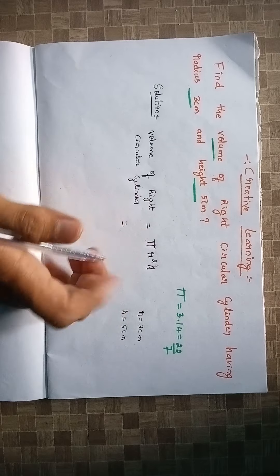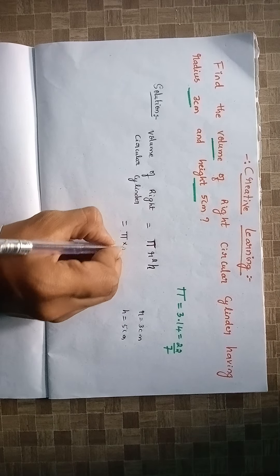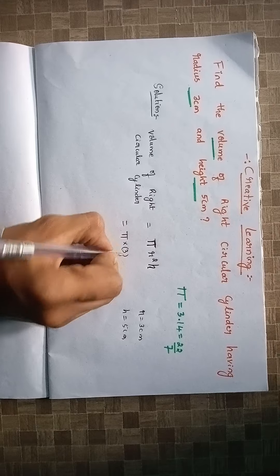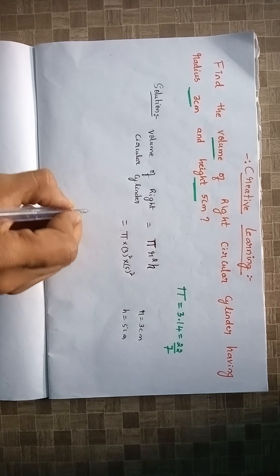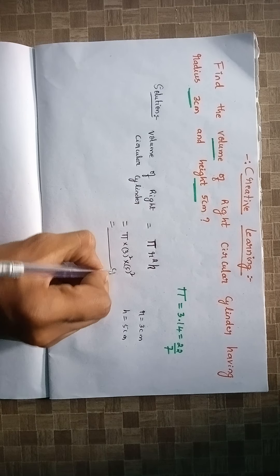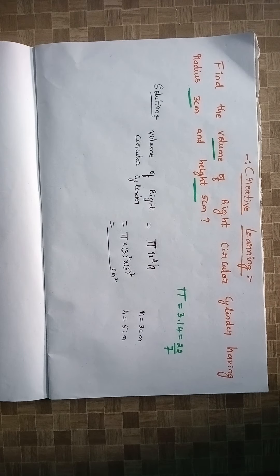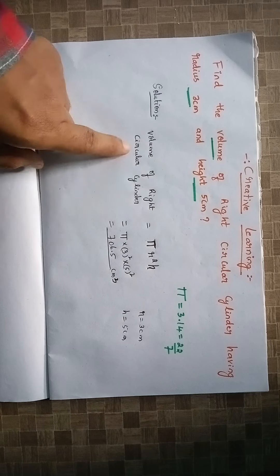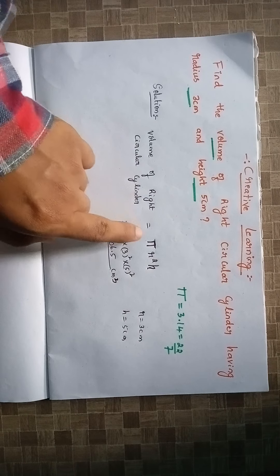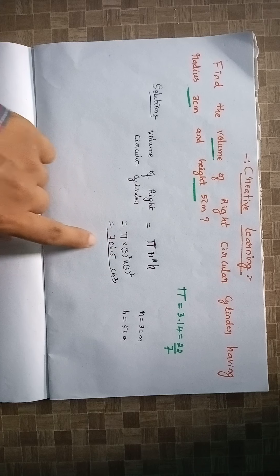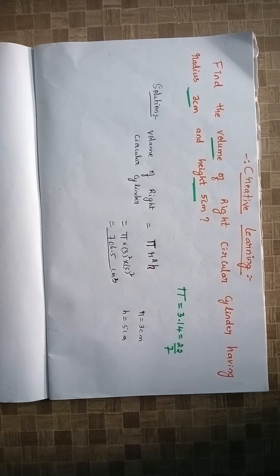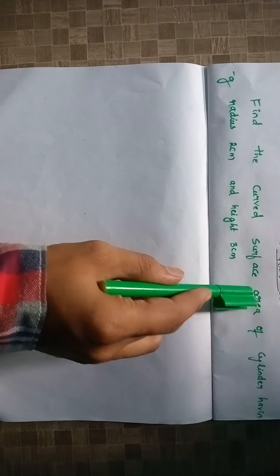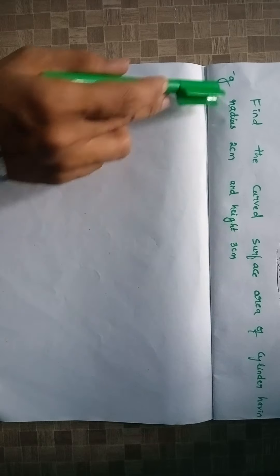Now substitute the values: π into 3² and height is 5. The volume of a right circular cylinder, when we substitute the values, we get the answer: 706.5 centimeters cubed.